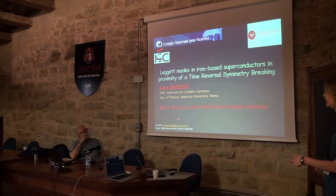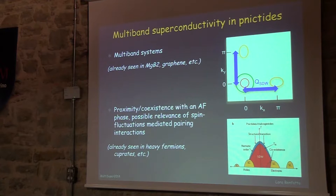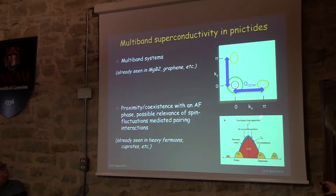My focus will be the physics of iron-based superconductors. I'm not going to give an introduction to the field, but just want to point out a couple of ingredients that will be crucial for what I'm going to discuss. The first one: these are really multi-band superconductors. The band structure can change from one material to the other, but in most cases one has a couple of hole bands around the gamma point of the Brillouin zone, and these two electron bands.